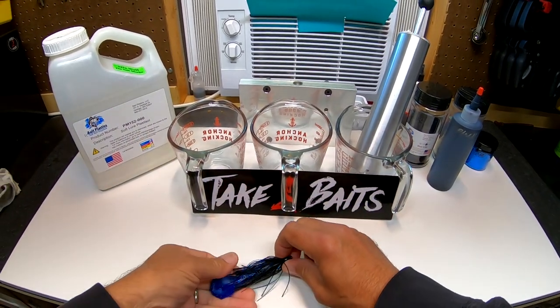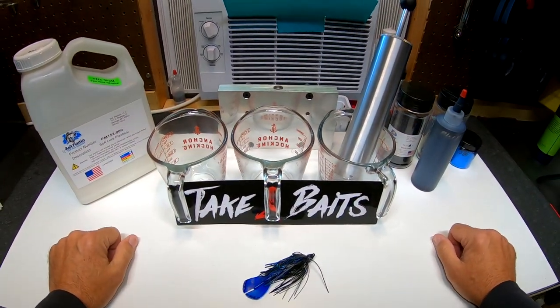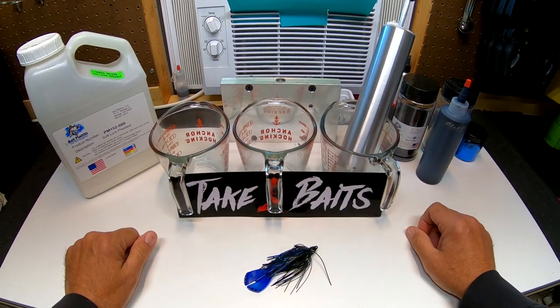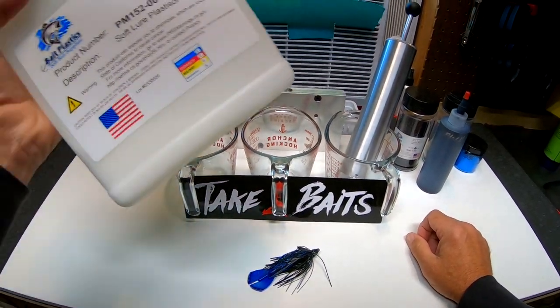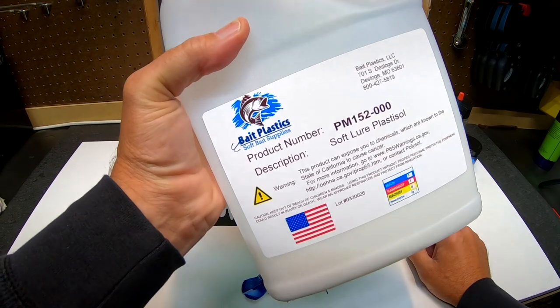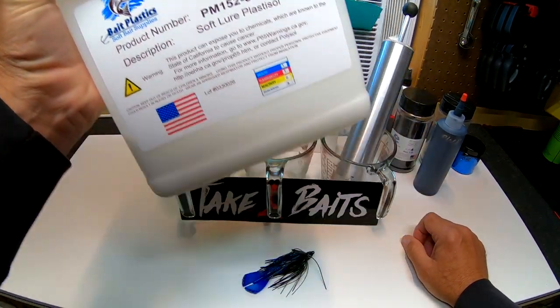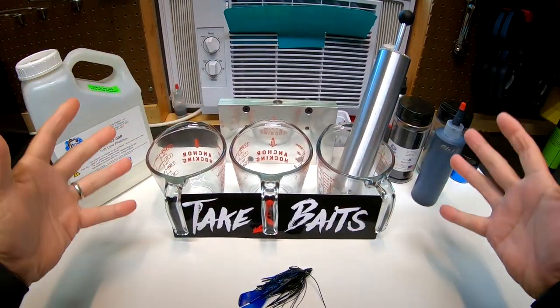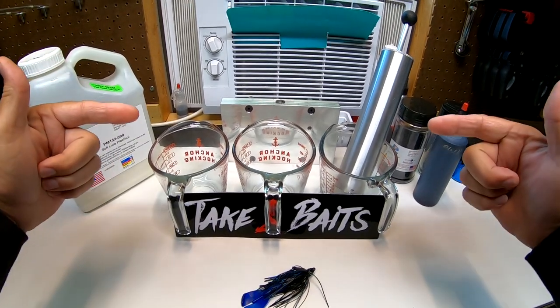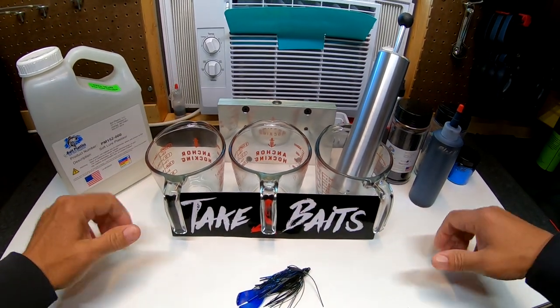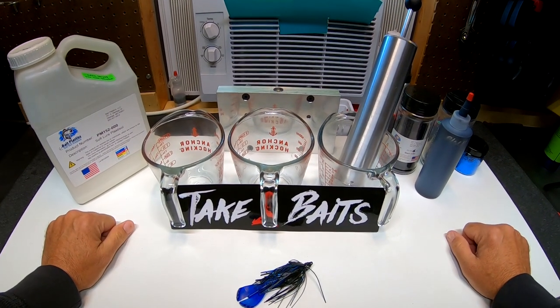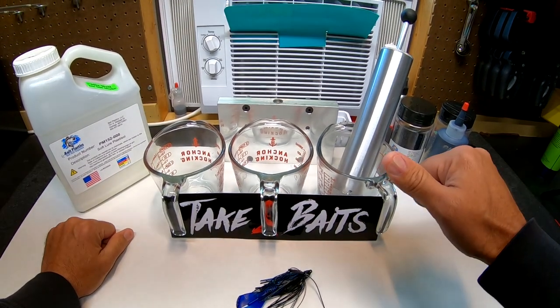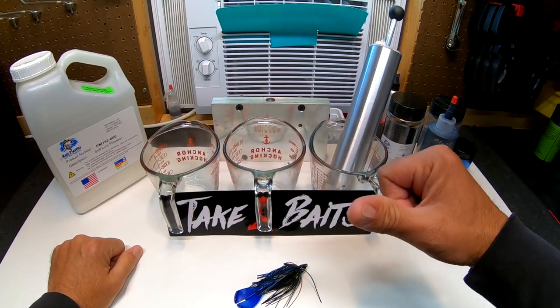You got to stay tuned to the very end to see the total outcome. I have three Pyrex glasses in front of me, an injector, mold, some colorant, some glitter, and some soft plastics by Bait Plastics LLC. If you guys have not checked out Bait Plastics, please be sure to do so at baitplastics.com. They got everything you need to help you get in the game or step your game up to the next level. Check out my soft plastic line at take2fishing.com or take2baits.com.